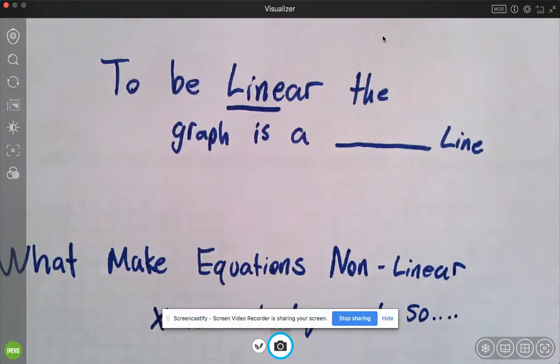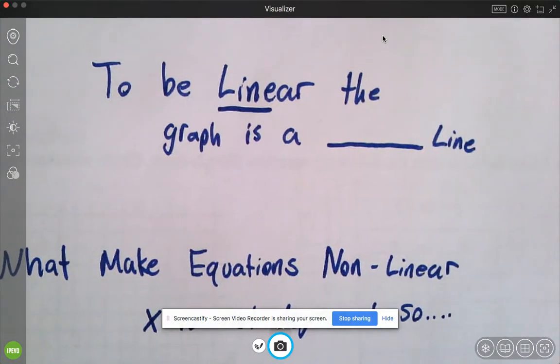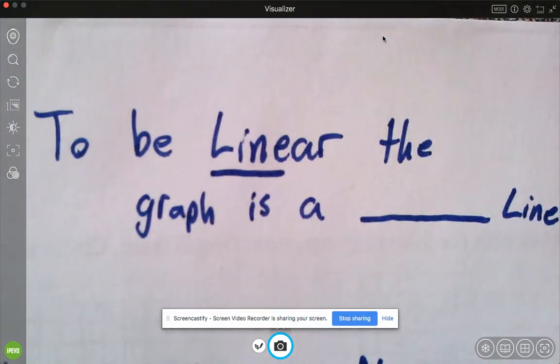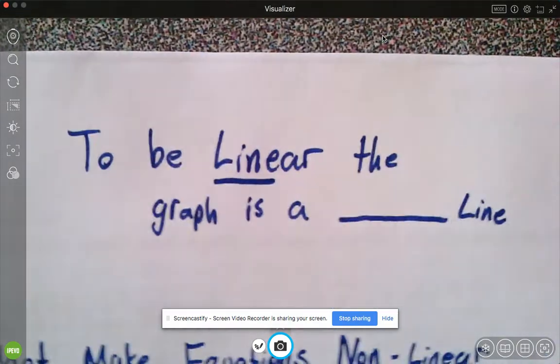All right, so I want to add a little bit to what Jimmy Chang was saying yesterday about linear and nonlinear functions. So just to clarify, could someone tell me, to be linear the graph is what kind of line again? Straight.